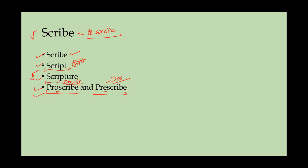The doctor writes those things on a prescription pad, so both words contain the root 'scribe' meaning to write. Etymologically, both words mean something written before — 'pre' means before and 'pro' also means before. So both are given to you in advance, but prescribing is a suggestion about doing something, while proscribing is a suggestion about not doing something.